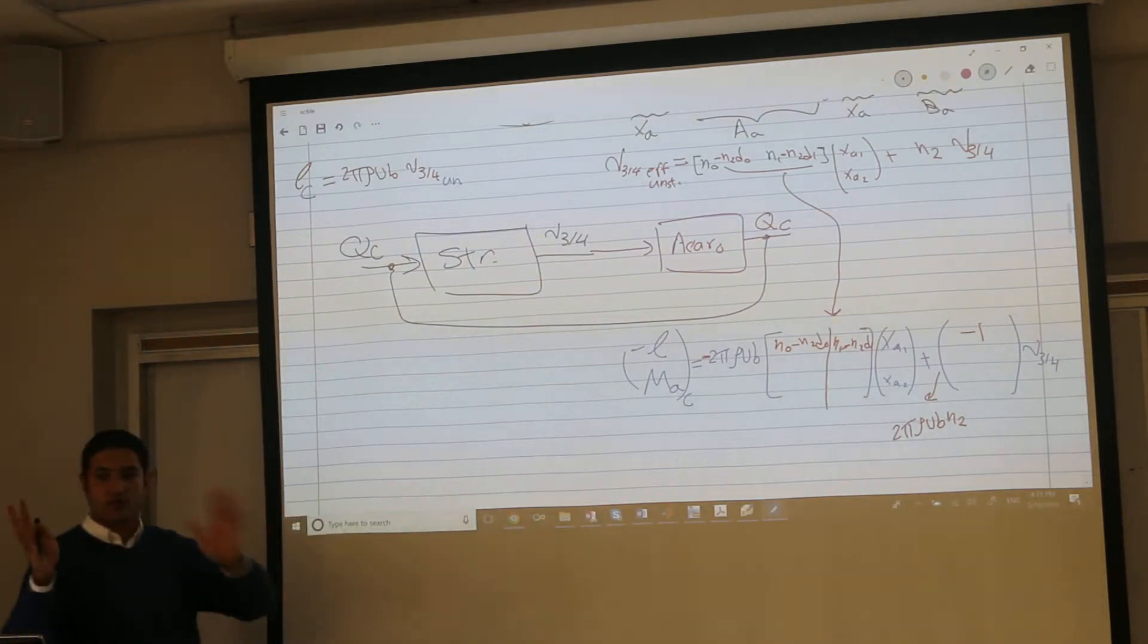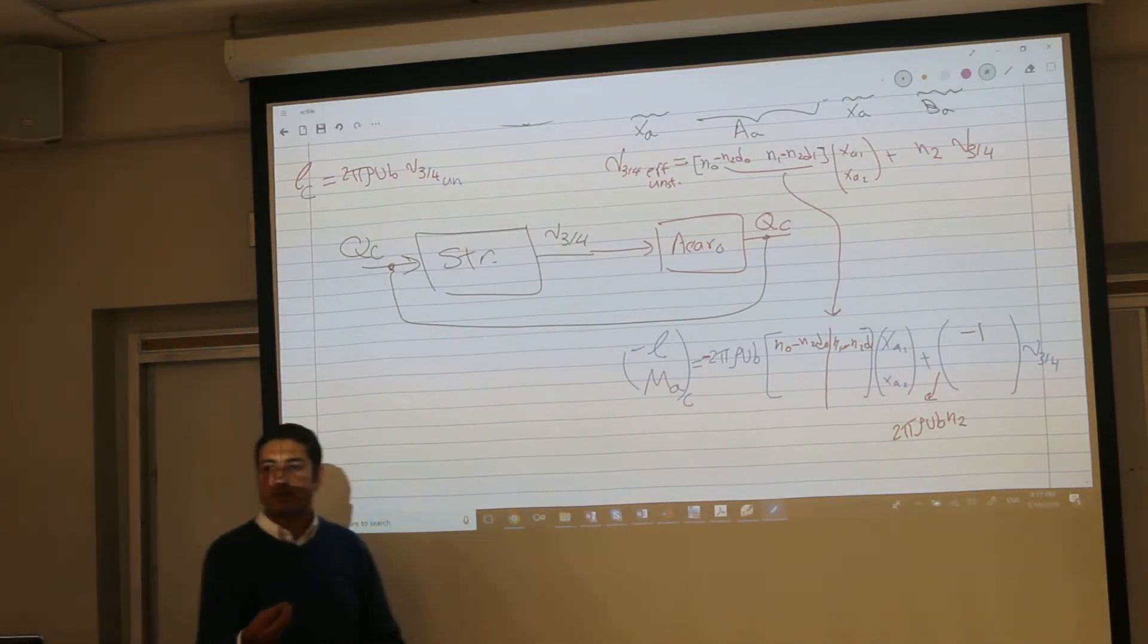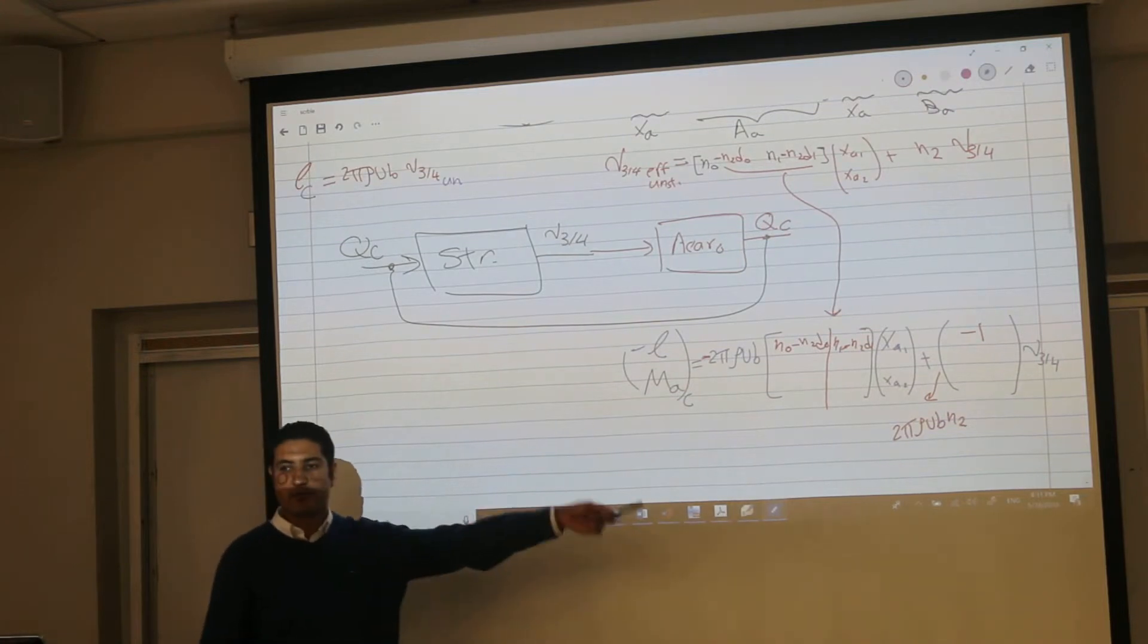Non-circulatory acts where? Quarter. One half. And the effective one that computes the angle of attack is the three quarter. Very convenient.